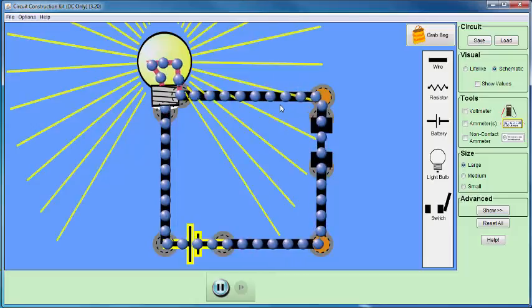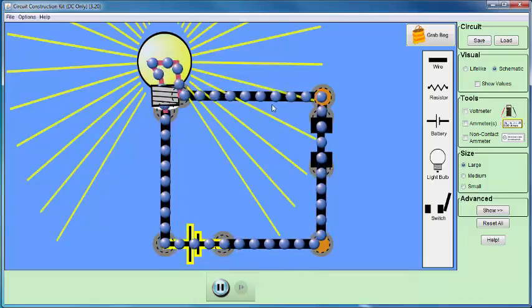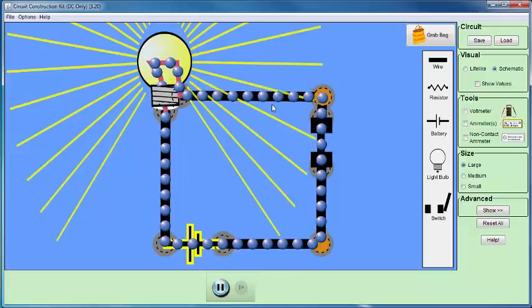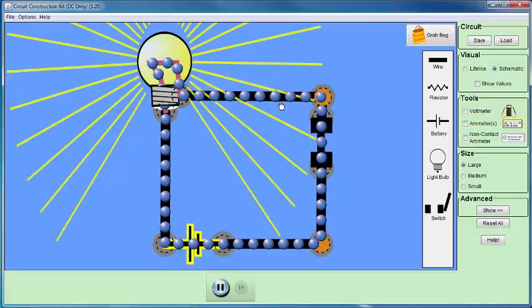If I had the charges moving twice as fast, so I had two coulombs of charge going past each second, then I would have a current of two amperes. So if I had more electrons moving through a certain point of the circuit, then I would have higher current.